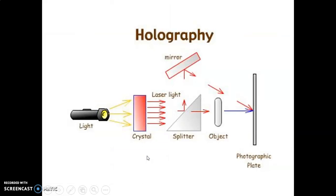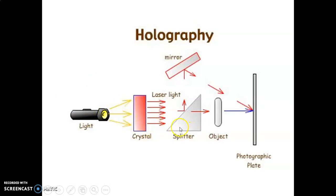Here is the actual system which is used to record holograms. The light source used for this purpose is red lasers — usually helium-neon lasers — which are coherent monochromatic sources of light. Next to that, a crystal is used to produce a parallel beam of light. The laser light is passed through the crystal and we can have a parallel beam of laser light.